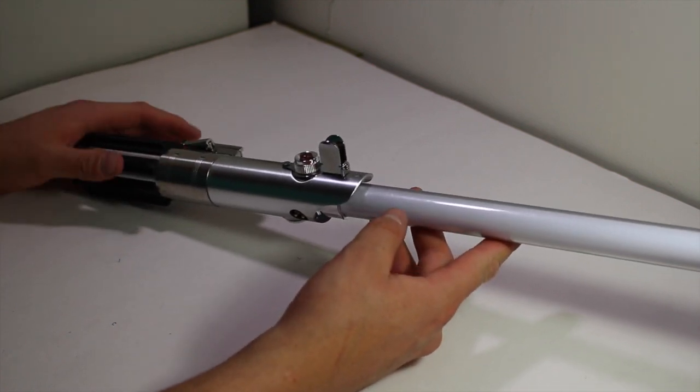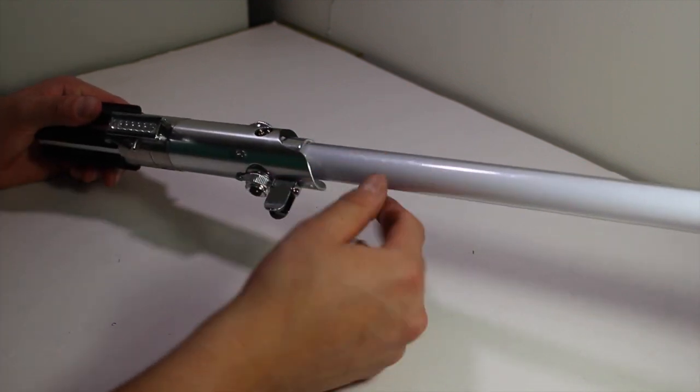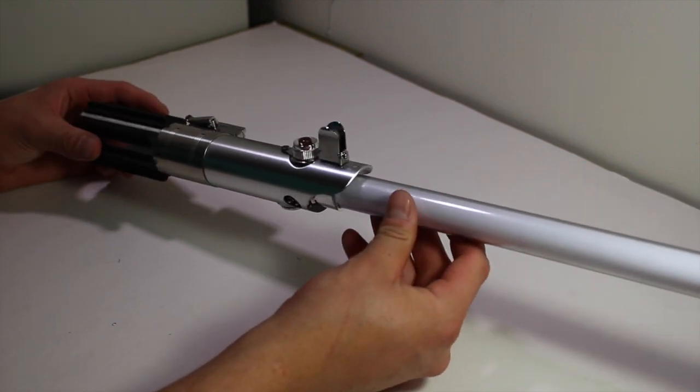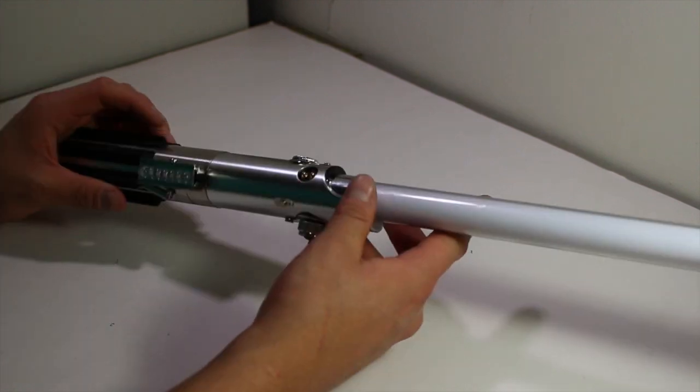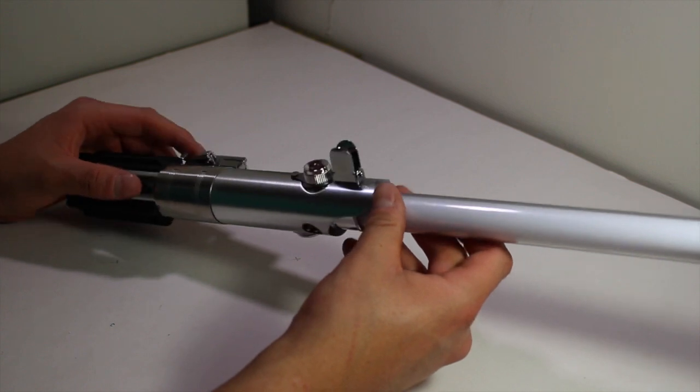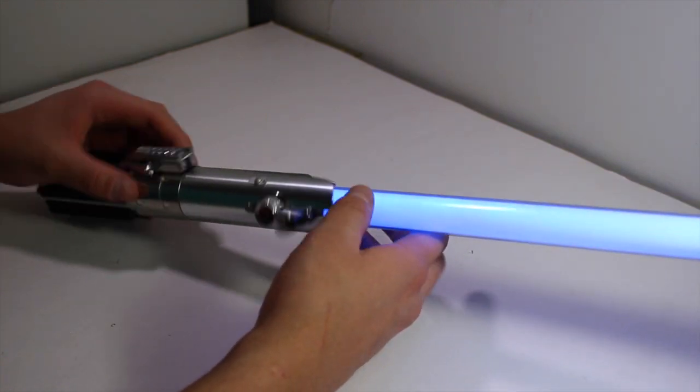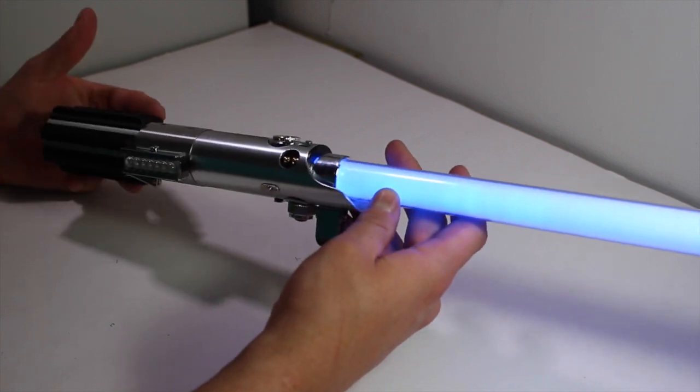I looked all over online, videos, Reddit threads, you name it. Couldn't find anything on how to take off the Black Series blade. I don't think anyone attempted to. I found out a way how to take out the blade without damaging the lightsaber itself. I put it back together just to show that it could go back together and it still works.